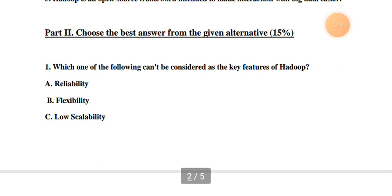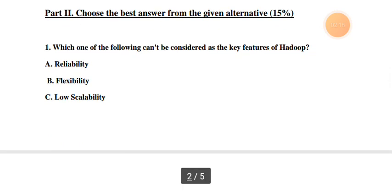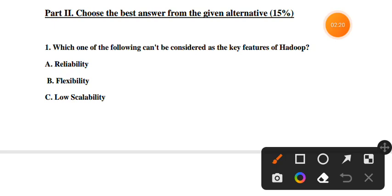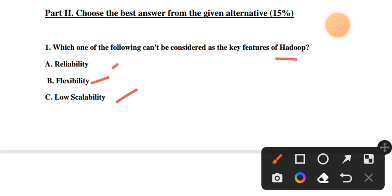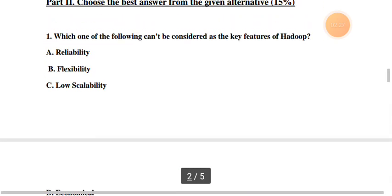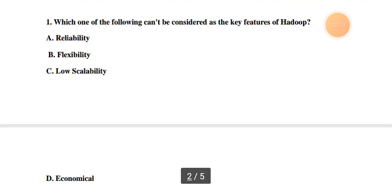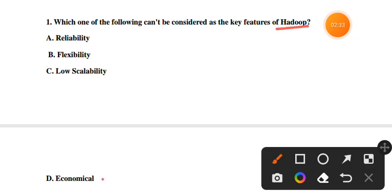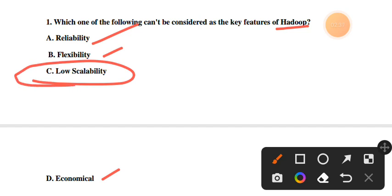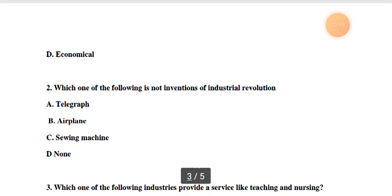Part two: Choose the best answer. Which answer can be considered as key features of Hadoop? The key features are: open in nature, reliability, flexibility, low cost, scalability, and economical. Hadoop is cost-effective and scalable, so these are the key features of Hadoop framework.